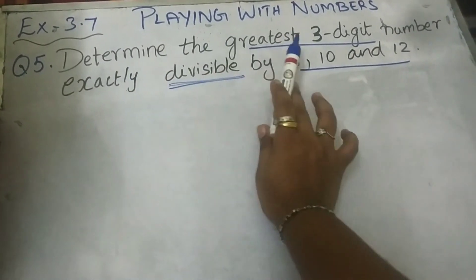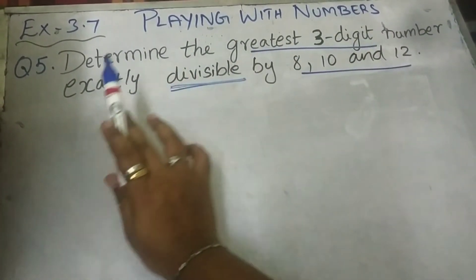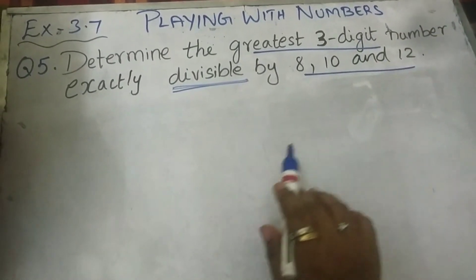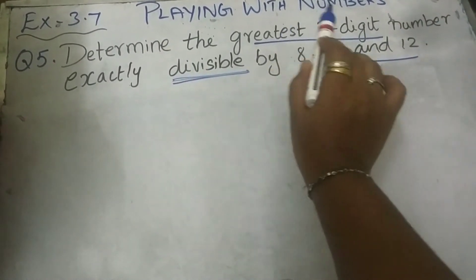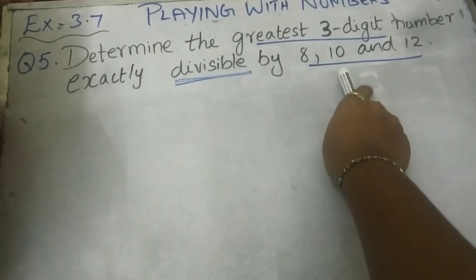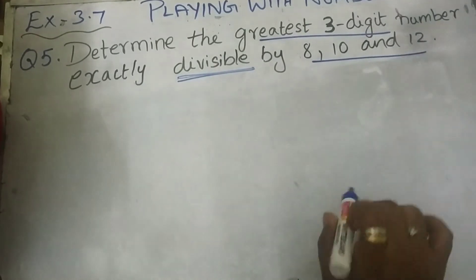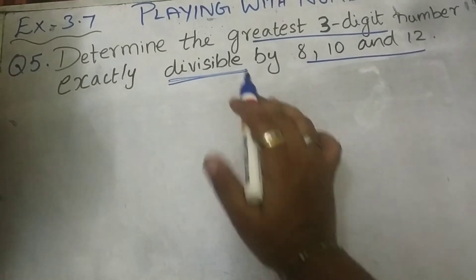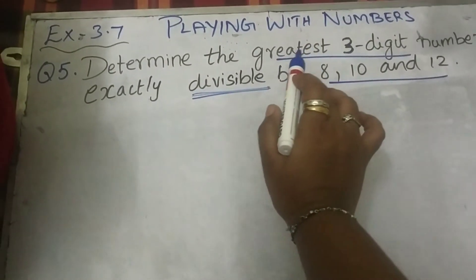Determine the greatest 3-digit number exactly divisible by 8, 10 and 12. So we have to find the greatest 3-digit number that should be divided by 8, 10 and 12 like the previous sum. Previous sum we have seen with the smallest 3-digit number. Here we are going to find the greatest 3-digit number.